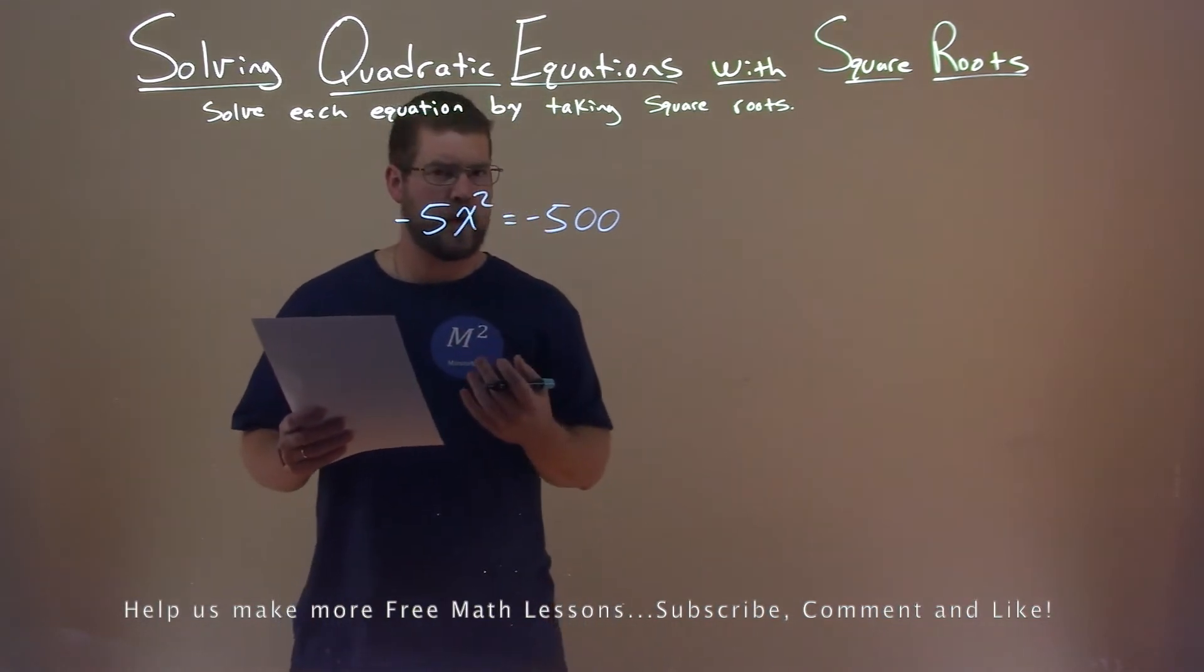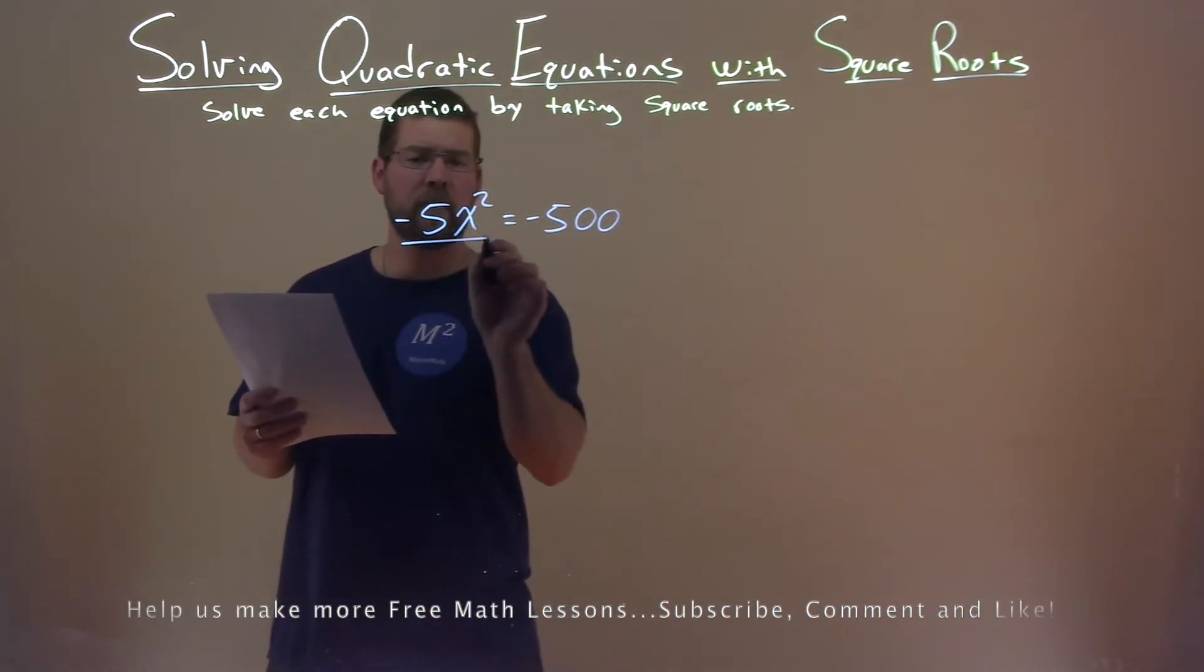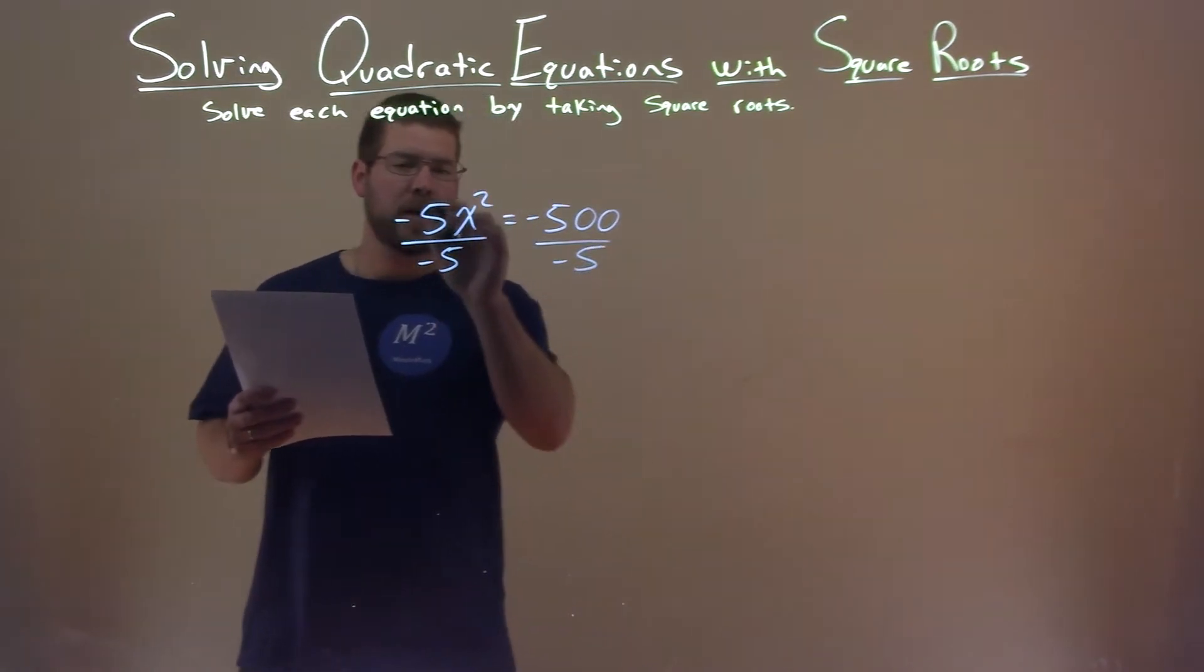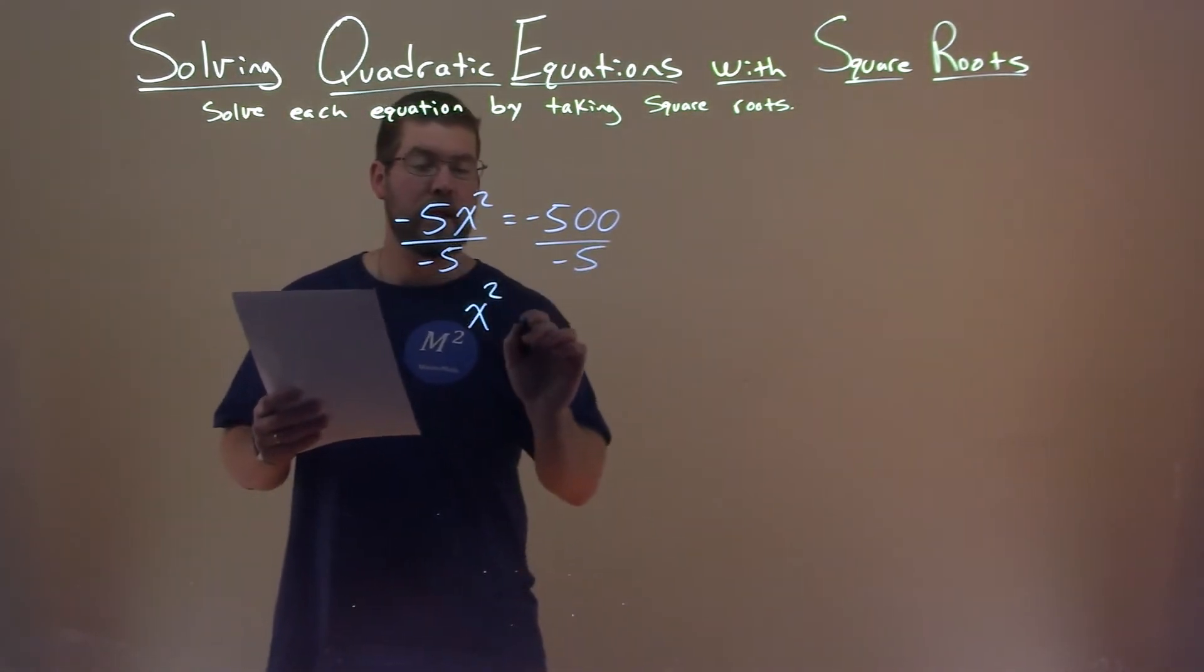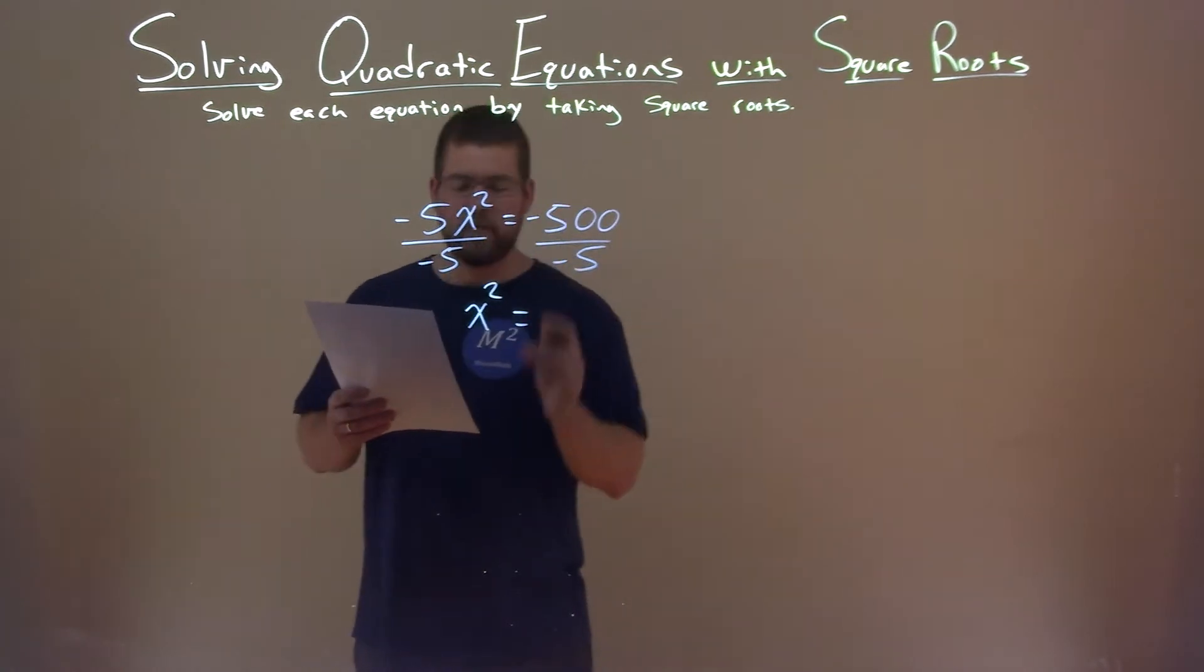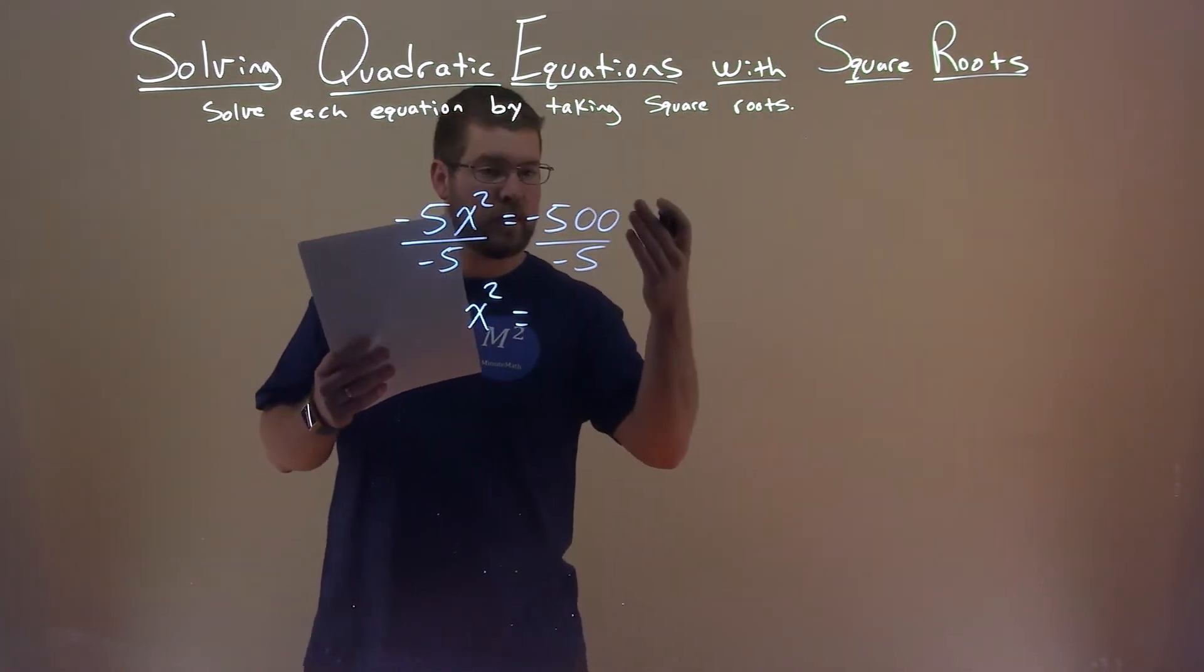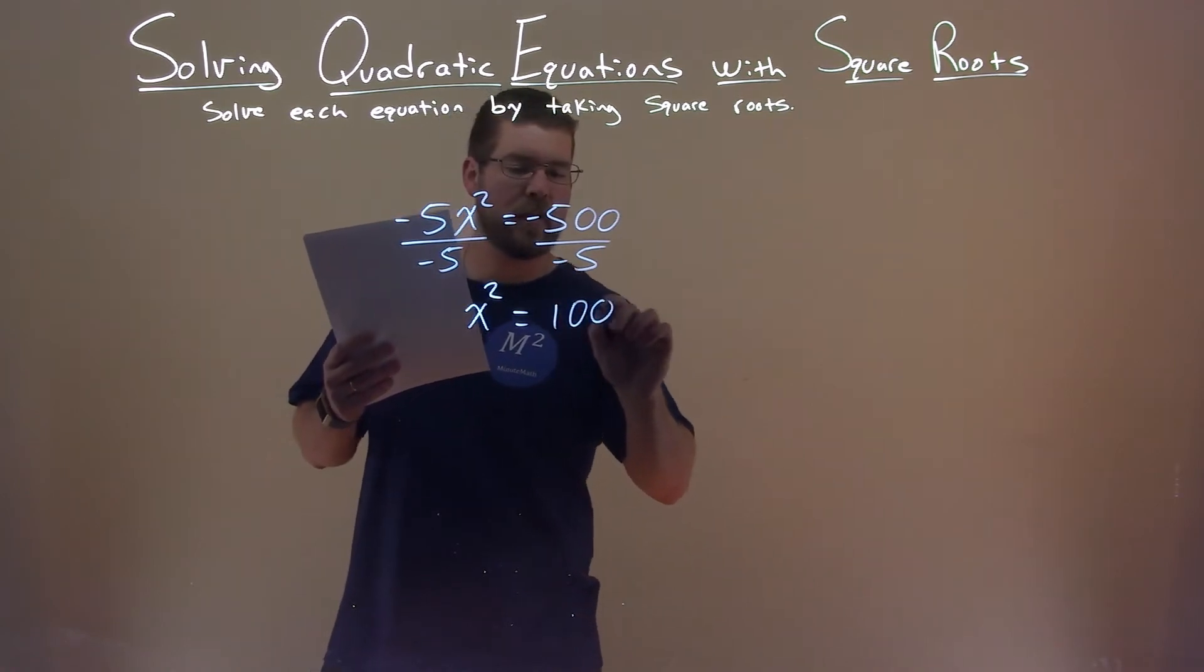Well, first I have to get x squared by itself, so to do that, I have to divide both sides by negative 5. Negative 5 cancels out, leaving us with x squared. Negative 500 divided by negative 5, remember negative divided by negative is positive, and so we have positive 100 here.